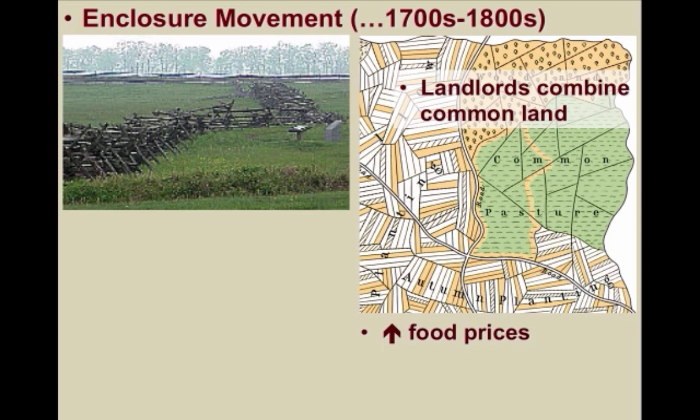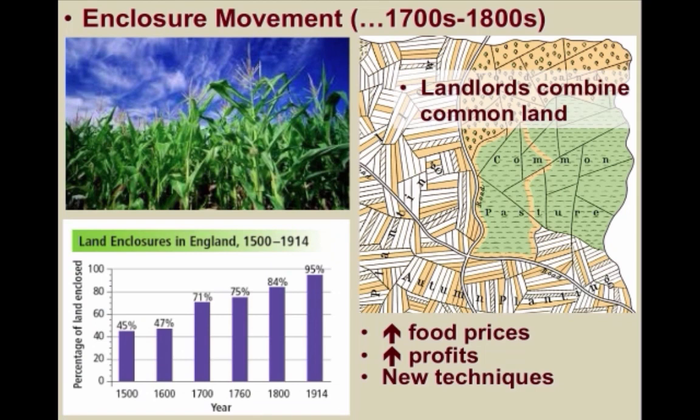Several wealthier peasants supported the enclosure movement, since they could sometimes rent the land and make more profit themselves. Landlords earned greater profits due to increased efficiency — for example, through the production of more wool or even more grains. New techniques could also be experimented with, and peasants were often given other land as compensation, although often of less quality and extent. The enclosure movement made farming more efficient, which meant fewer peasants were needed to farm. As a result, many migrated to the cities, where cheap labor was an ever-increasing demand.